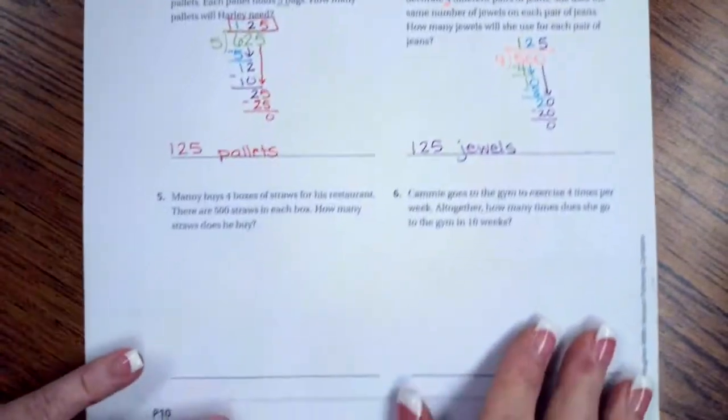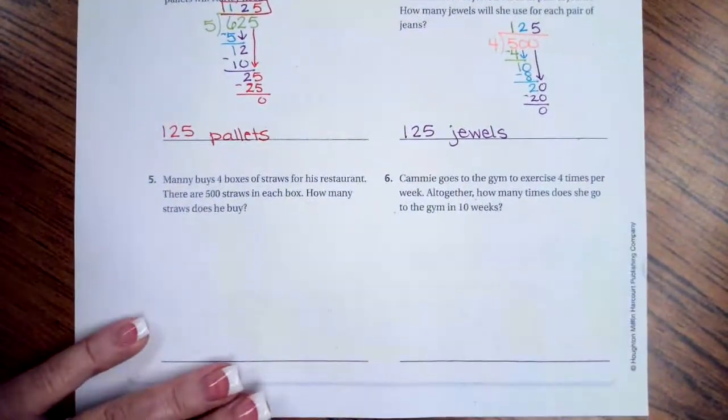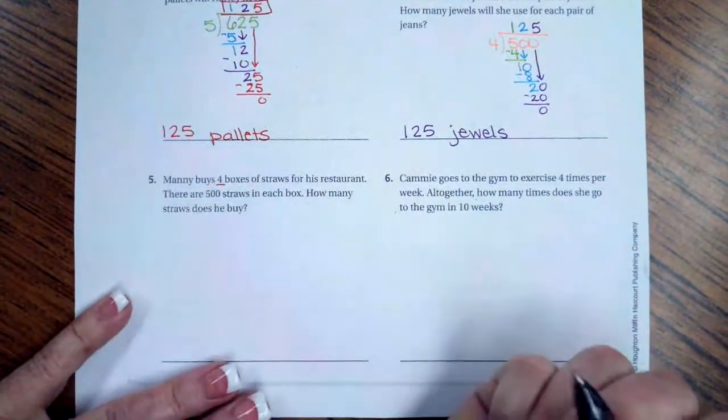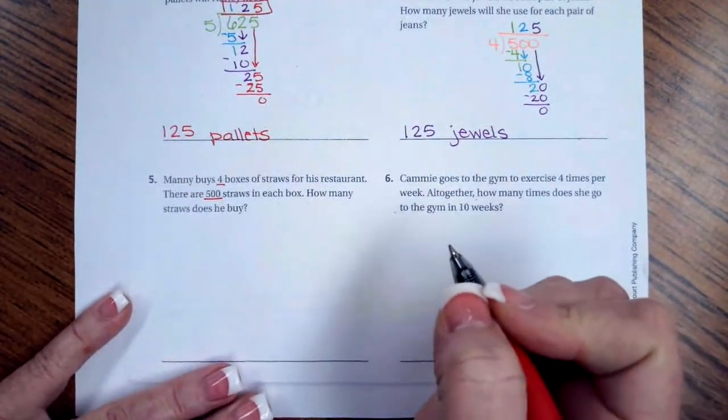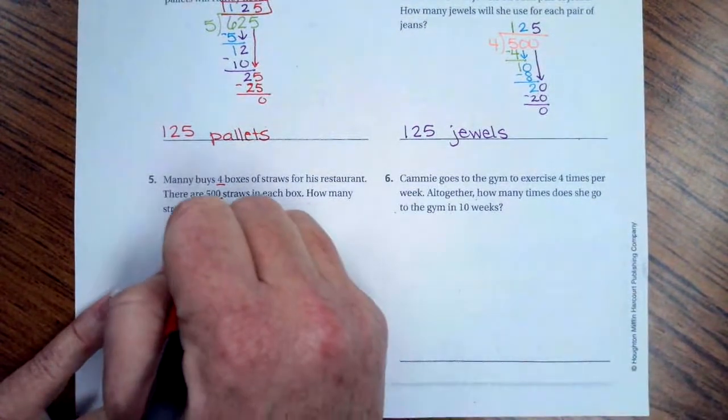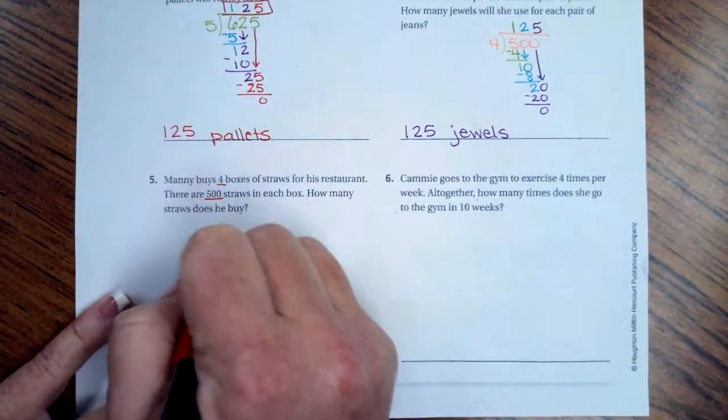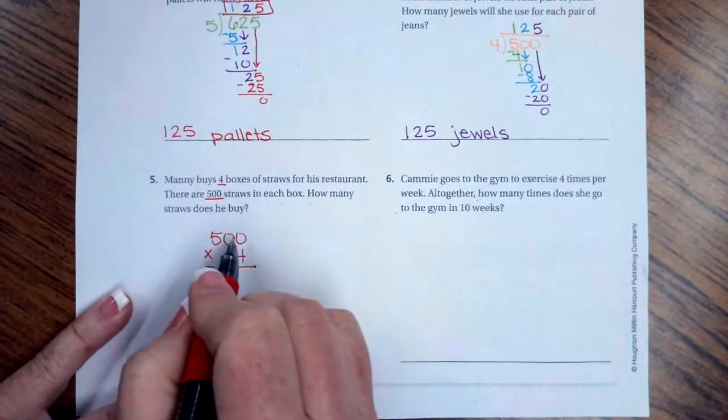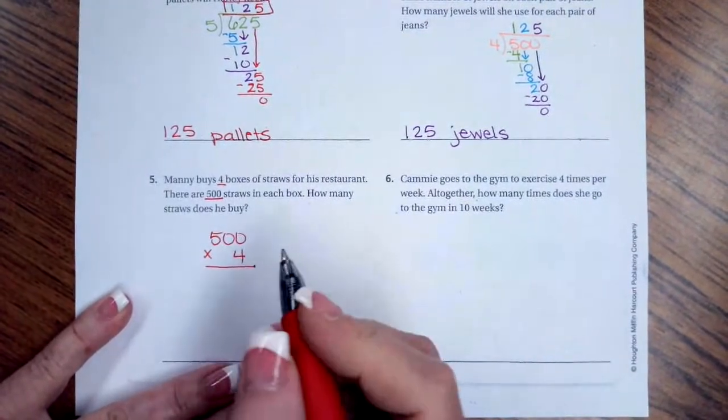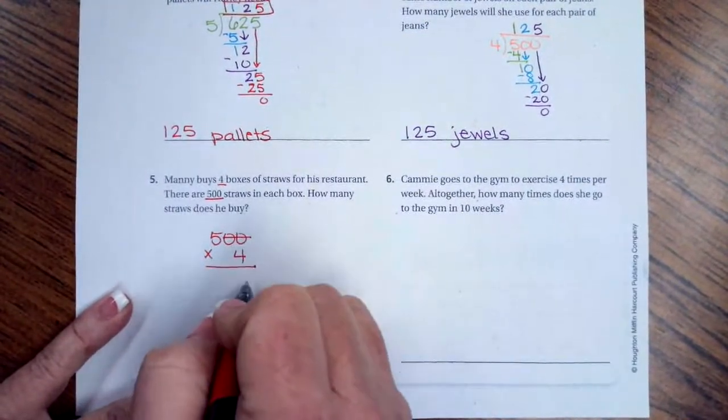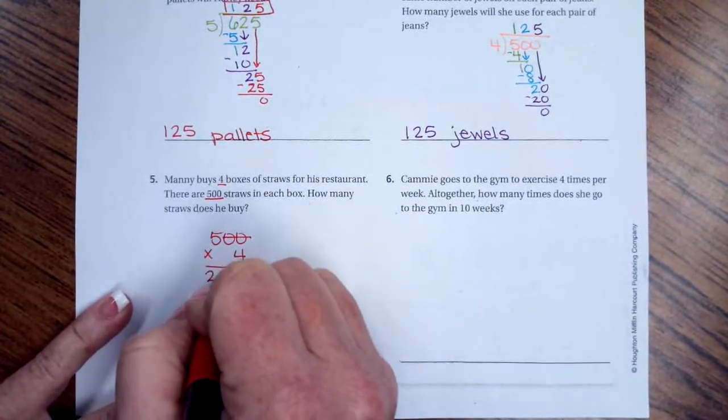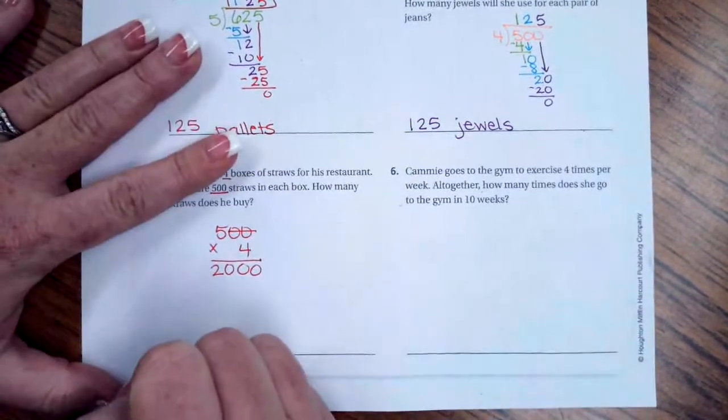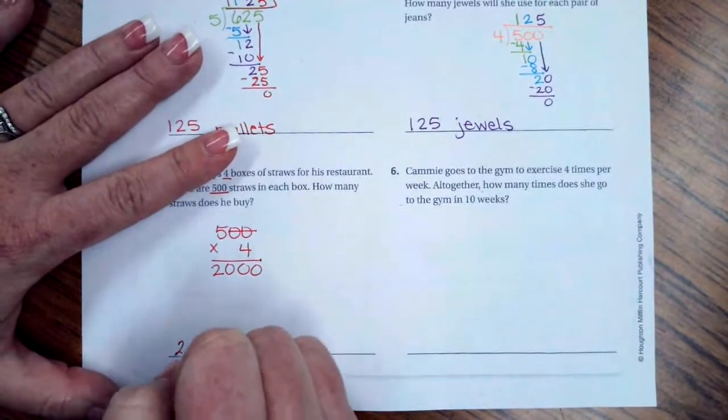Number five. Manny buys four boxes of straws for his restaurant. There are 500 straws in each box. How many straws does he buy? So we have 500 × 4. There's 500 in each box and there's four boxes of them. I'm going to take off these two zeros and put them at the end, and then 4 × 5 = 20, so he has 2,000 straws.